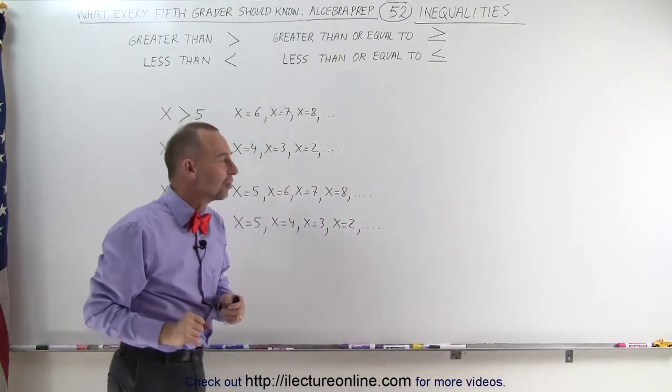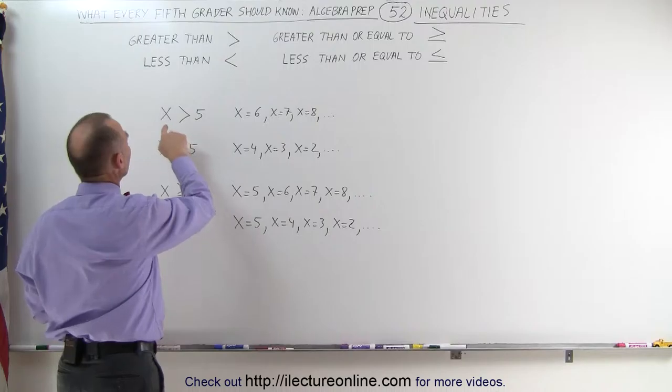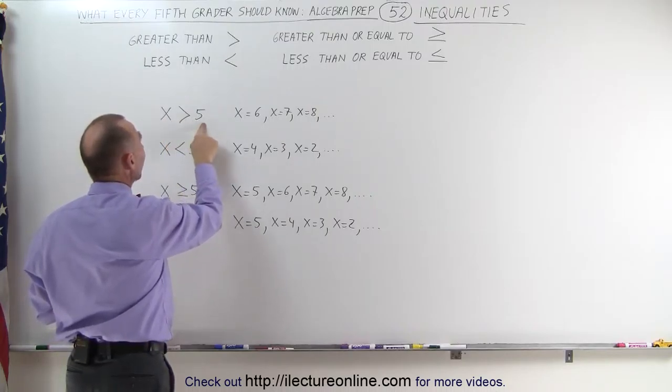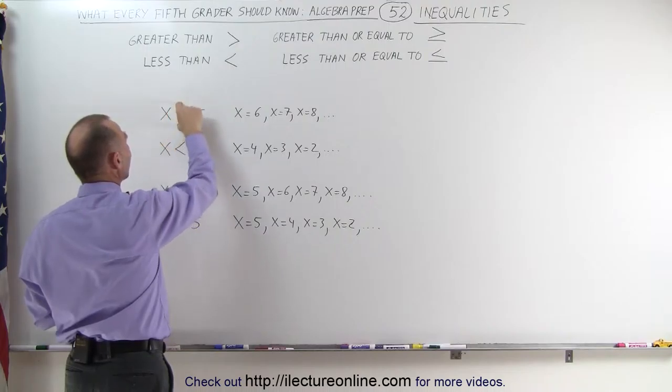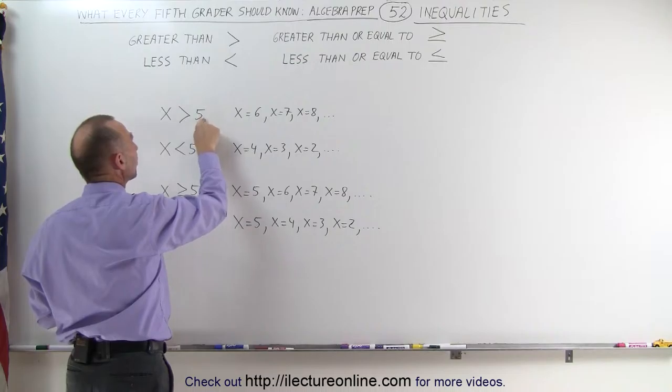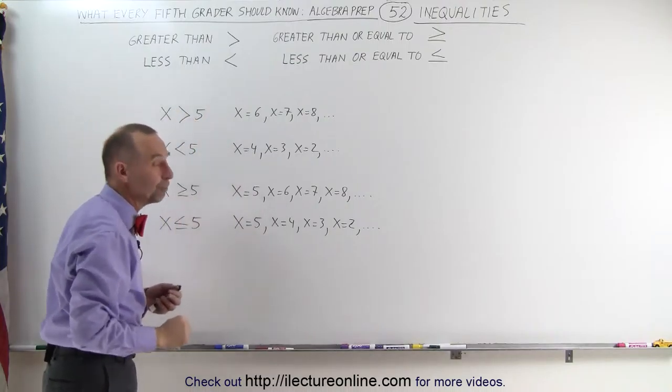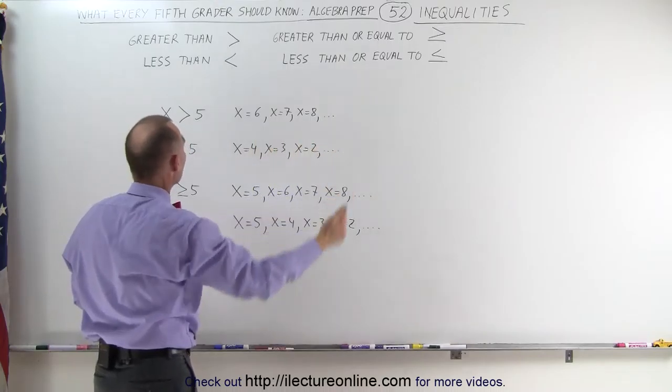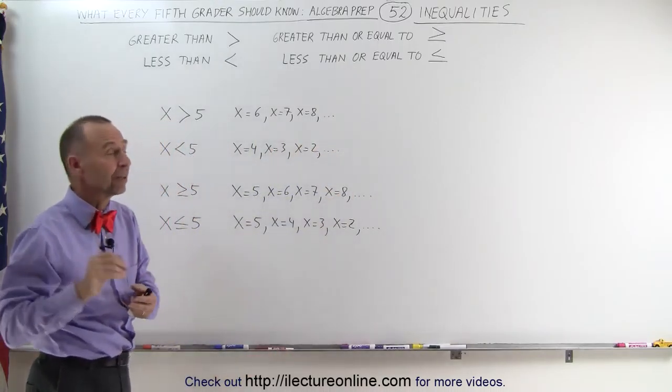Some examples will help us understand it. Here we have an expression that says x, the unknown number, is greater than 5. Since x is on the left side of the symbol like this, the open side of the symbol, this must be greater than the number 5. The number 5 is on the pointy side of the symbol which means that x can be 6, 7, 8, 9, 10 and so forth as long as it's greater than 5.